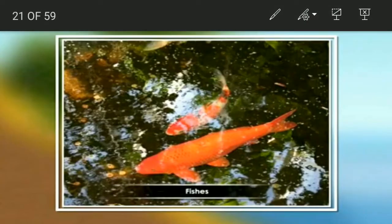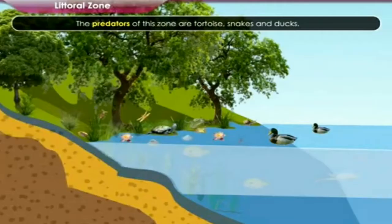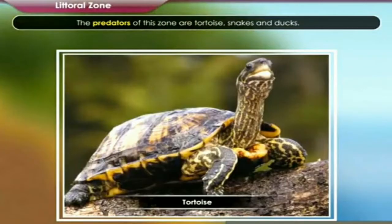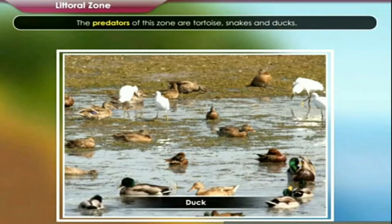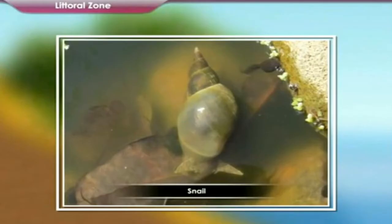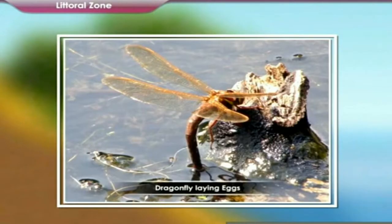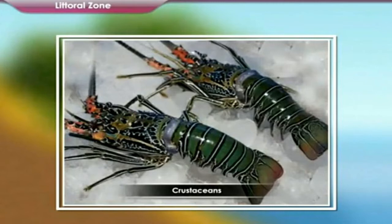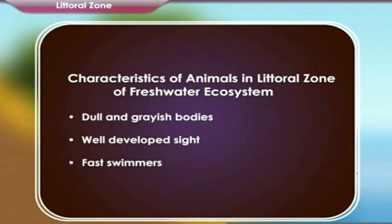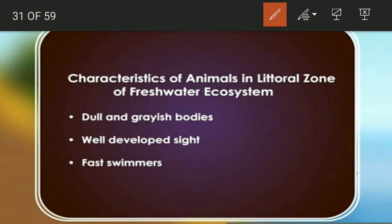Examples of vertebrates are fish, amphibians, and predators including tortoise, snakes, ducks, etc. The invertebrates include snail, clams, dragonflies, etc. The zooplankton include crustaceans and protista. The animals in this zone have dull and greyish bodies, well-developed sight, and they are fast swimmers.